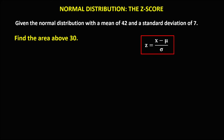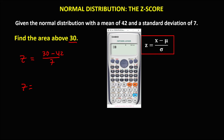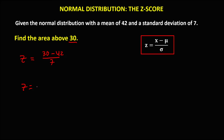For the next problem, we need to find the area above 30. Convert to Z-score: Z equals 30 minus 42, divided by 7. That gives us negative 1.71.